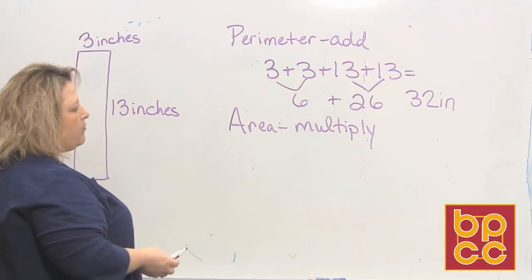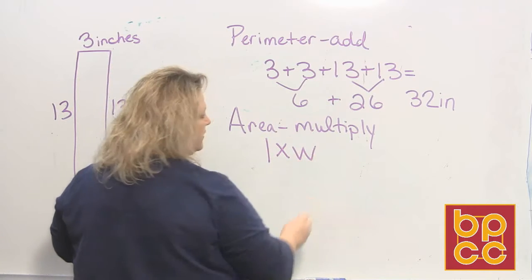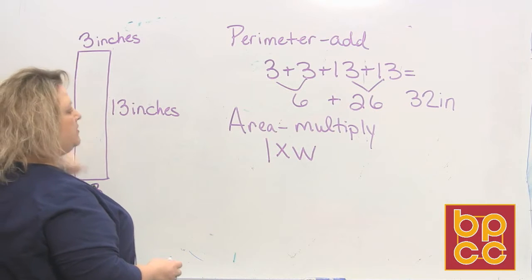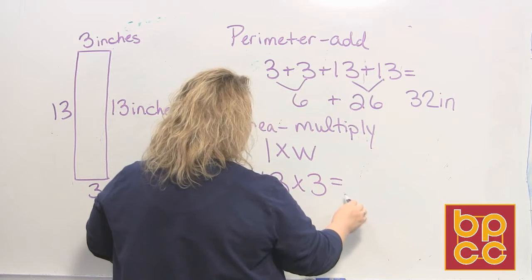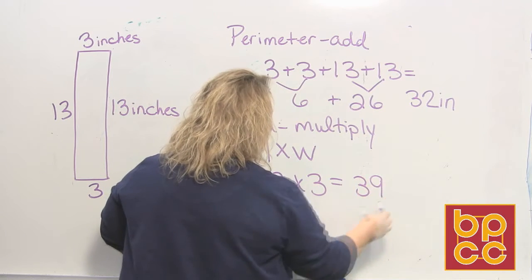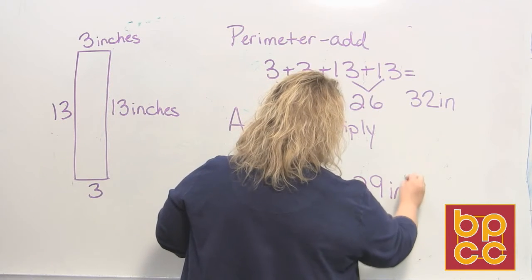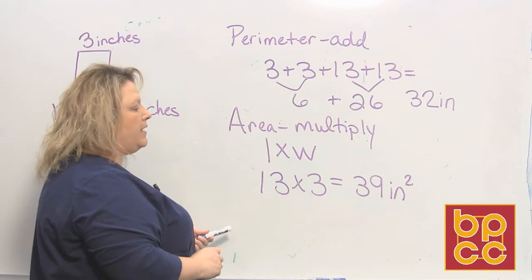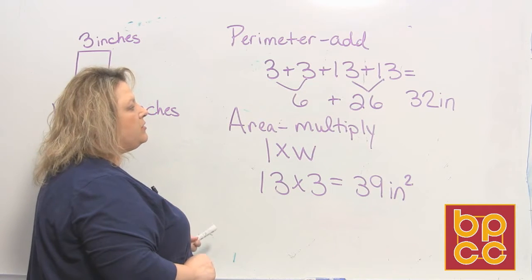Now for area, we're talking about multiplication — the formula is length times width. We do 13 times 3, and the answer is 39. Because this is a square measurement, you put the little superscript 2 to indicate square units, so the area is 39 square inches and the perimeter is 32 inches.